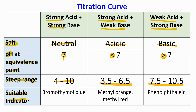For example, if we know it is neutral — pH equals 7 — we can choose bromothymol blue. If it is an acidic salt, we can choose methyl orange or methyl red. If we have a basic salt, we can choose phenolphthalein.